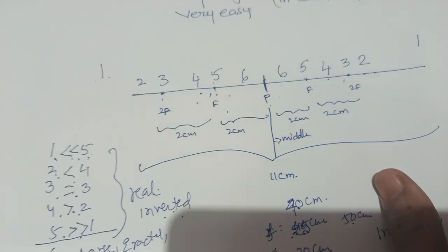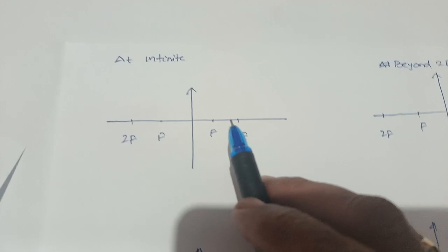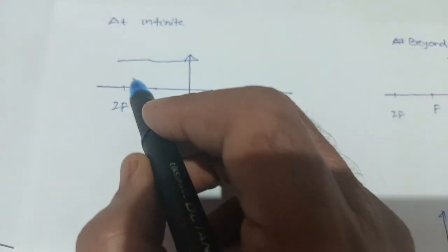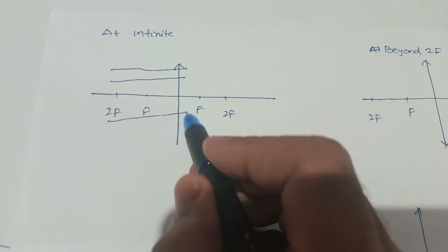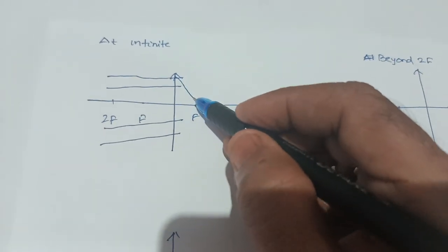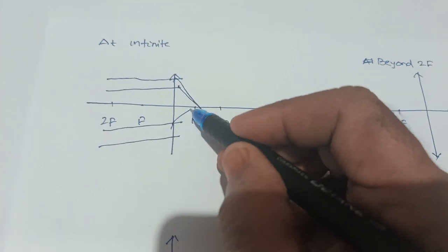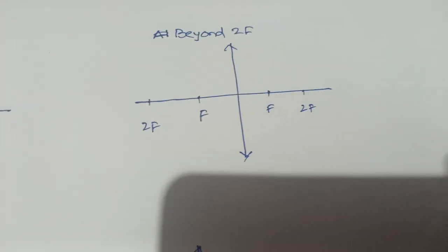Now let us go to how to draw the diagrams in an easy manner. First, suppose the object is at infinite. At infinite there is only one case: the image is formed at f, because the rays are parallel lines and they pass through the focal point. This is the first diagram.